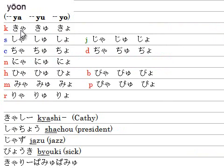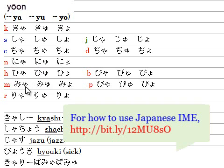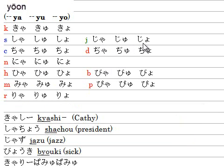So the yōon sounds are: kya, kyu, kyo; sha, shu, sho; cha, chu, cho; nya, nyu, nyo; rya, ryu, ryo; ja, ju, jo; ja, ju, jo; bya, byu, byo; pya, pyu, pyo.